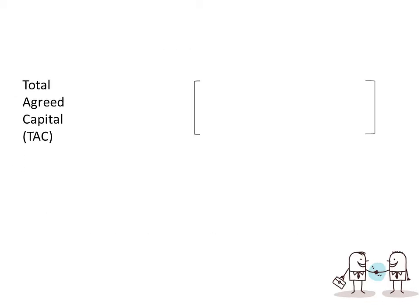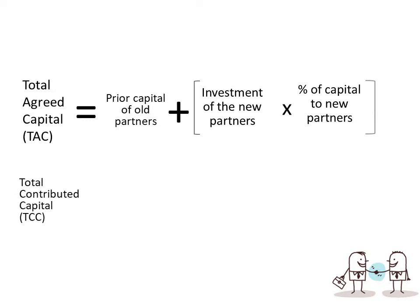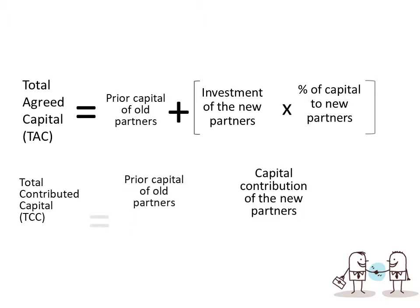To compute: the Total Agreed Capital (TAC) equals the prior capital of the old partners plus the investment of the new partner, divided by the new partner's proportion in the profit and loss ratio. The Total Contributed Capital (TCC) is the prior capital of the old partners plus the capital contribution of the new partner. We will use TAC and TCC in our future computations since this is now involved in investment in the partnership.